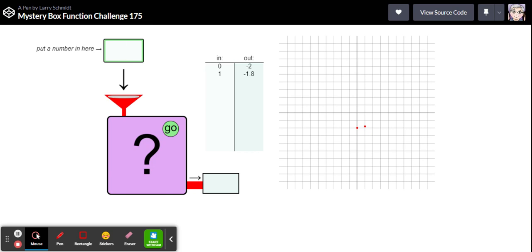Let's try a two. There's negative one point six. We've gone up by another point two. Let's try three. And the pattern continues and we've gone up by another point two. So it looks like we've got a line here.